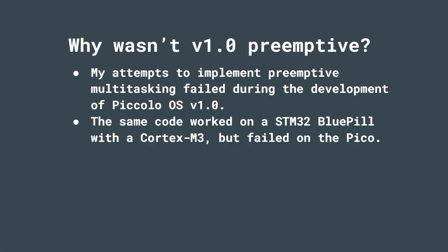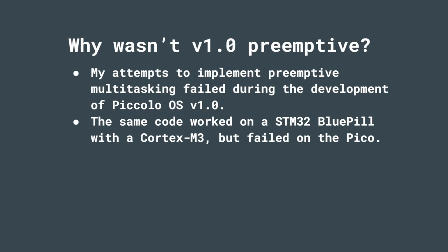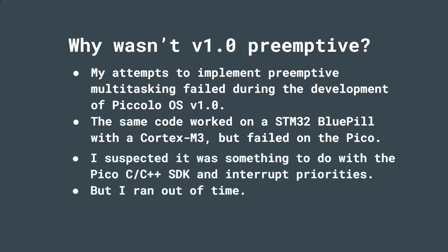Why wasn't V1.0 preemptive? Basically I tried to make it preemptive during the original videos, but it didn't work. The same code worked on an STM Blue Pill with a Cortex-M3, but it failed on the Raspberry Pi Pico, which led me to suspect something to do with the Pico C/C++ SDK — maybe interrupt handlers or interrupt priorities. But I ran out of time. I'd taught what I wanted to teach — context switching on a Cortex microcontroller — and I thought that's enough, I've got to move on.